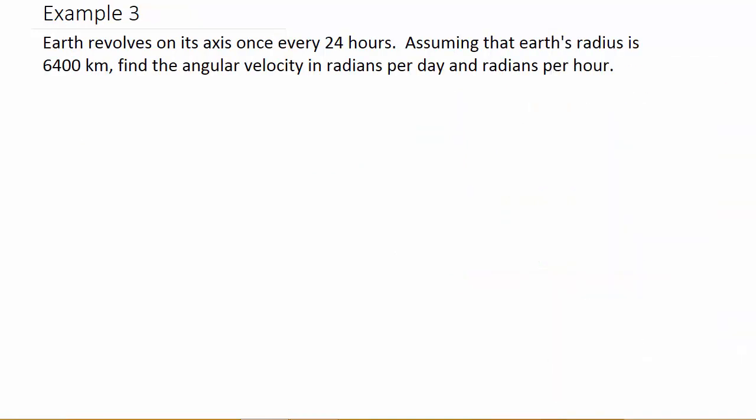It says the earth revolves on its axis once every 24 hours. Assume that earth's radius is 6400 kilometers. Find the angular velocity in radians per day and radians per hour.